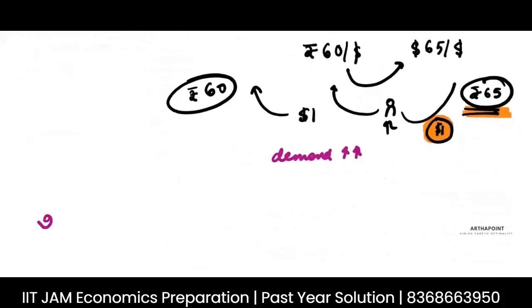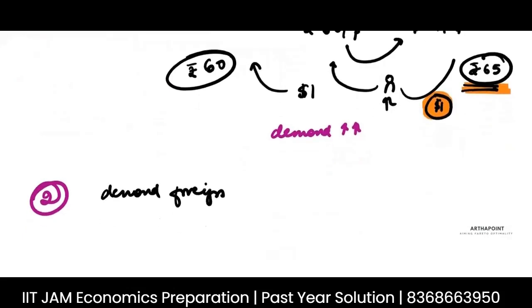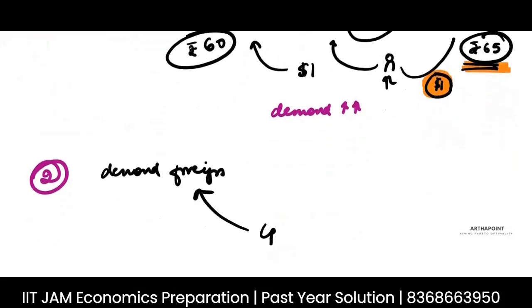Otherwise, the second thing that can happen is that everybody is demanding foreign currency. So the central bank may have to give this foreign currency to people and take back the domestic currency from people. In order to do that, it will have to reduce its reserves.